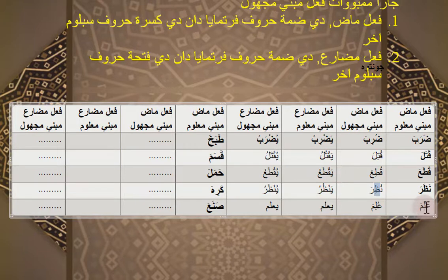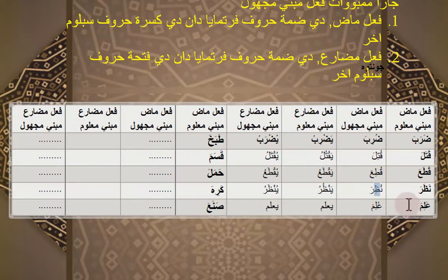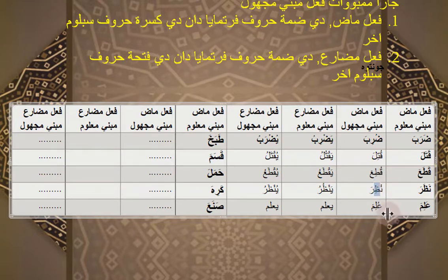Kalau huruf sebelum akhirnya sudah dibaca kasrah, tidak apa-apa, bukan berarti dikasih kasrah dobel, tidak. Yang penting kaedahnya itu di-dhammah huruf pertamanya, kemudian dibaca kasrah huruf sebelum akhir. Itu kalau fi'il mazi.